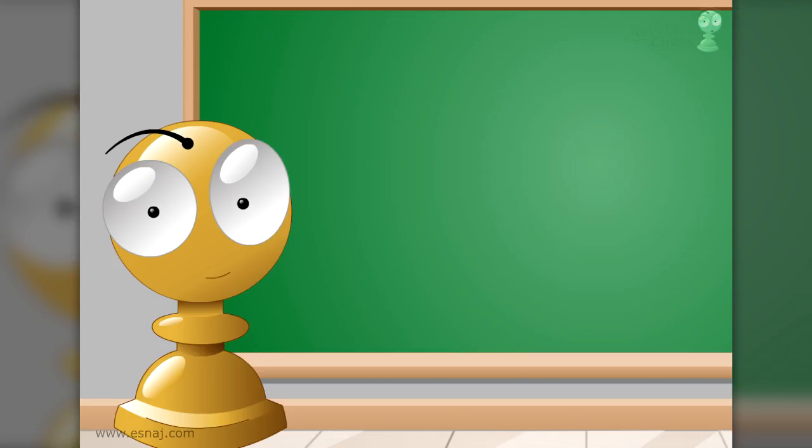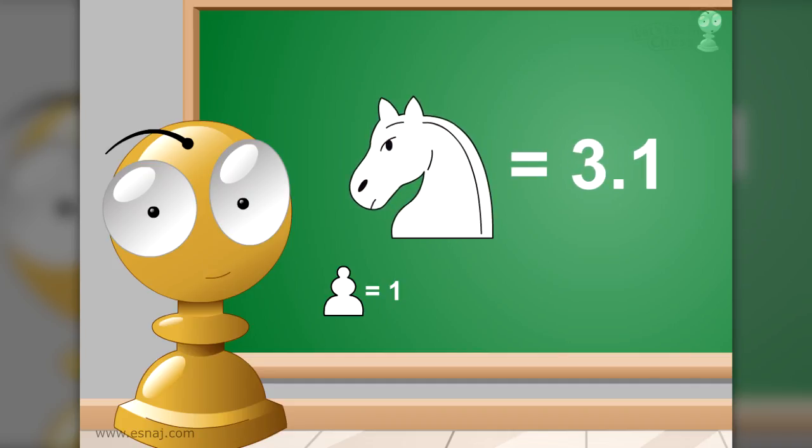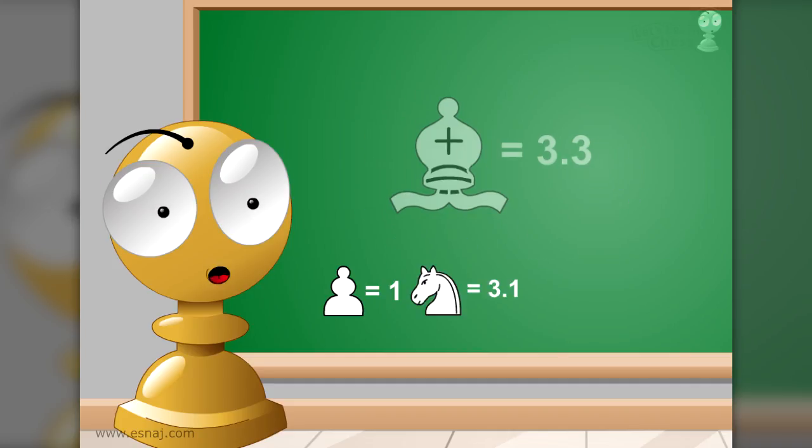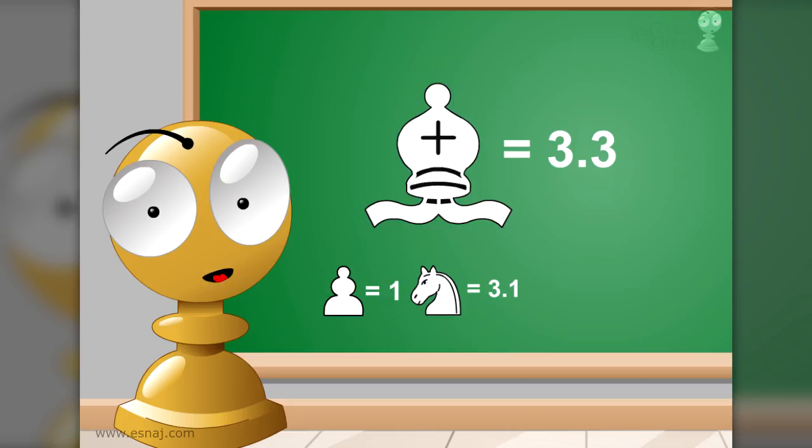Also, you should know the value of each piece. The pawn has a value of one point. The knight is worth 3.1. The bishop is worth 3.3, a little more than the knight.